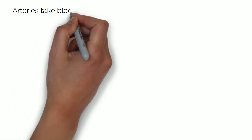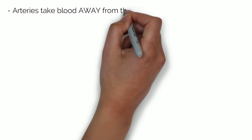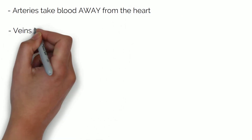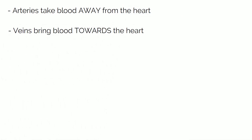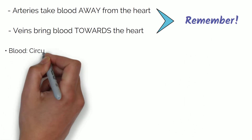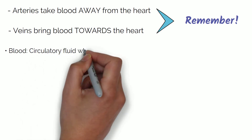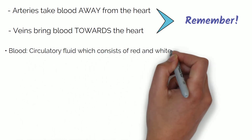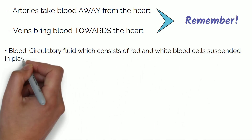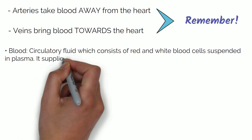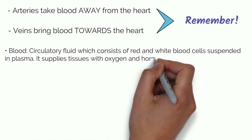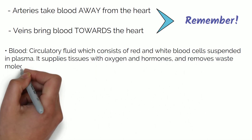It is important to remember that arteries take blood away from the heart and veins bring blood towards the heart. Blood is an important circulatory fluid which consists of red and white blood cells suspended in plasma, and is important for supplying tissues with oxygen and hormones and removing waste molecules.